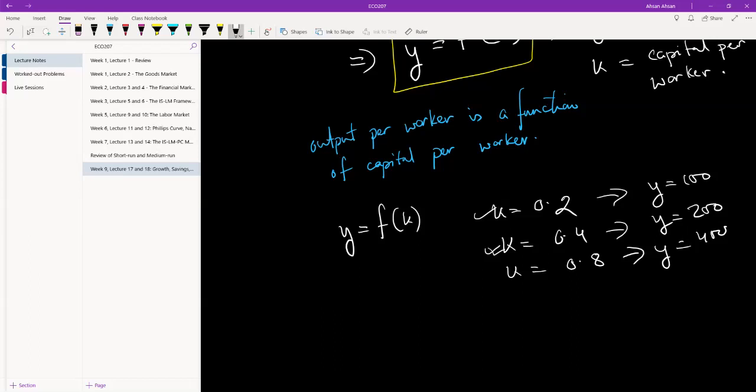So after a point, as we continue to increase our capital stock and we have more and more technology, our output isn't going to increase by the same level. Suppose we have k equals to one, everyone in Bangladesh has a laptop. Does that mean our output is going to double? No, not really. Having two laptops doesn't really help me do my job any better. How am I going to double my output?